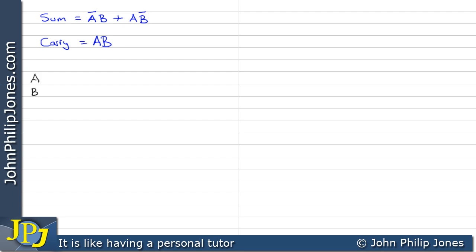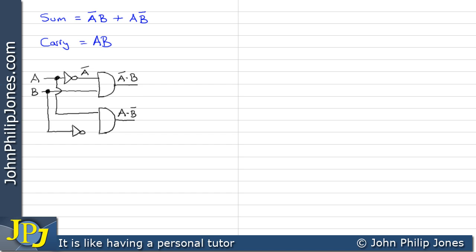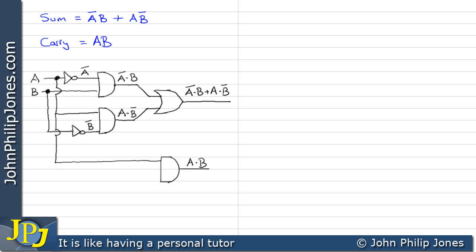We can now build the combinational logic circuit for these Boolean expressions. We take A through a NOT gate to give NOT-A, then an AND gate gives NOT-A · B. Another AND gate gives A · NOT-B, where B is sent through a NOT gate. These outputs feed into an OR gate giving NOT-A · B OR A · NOT-B. For the carry, an AND gate with inputs A and B gives A · B.